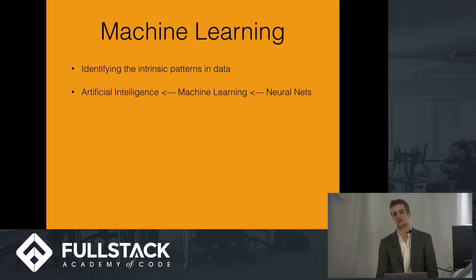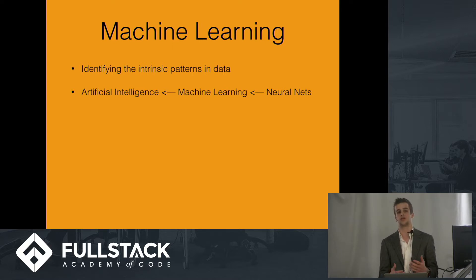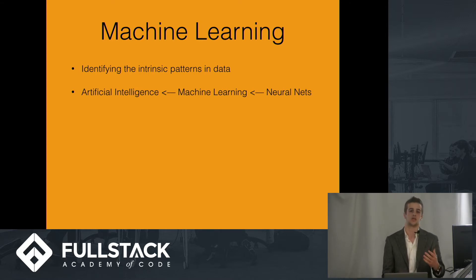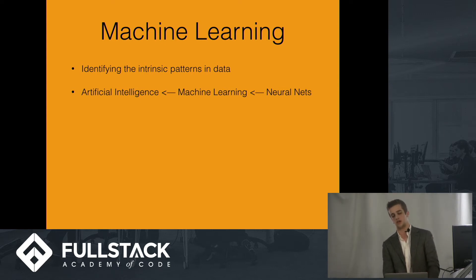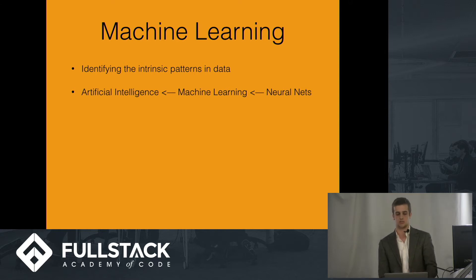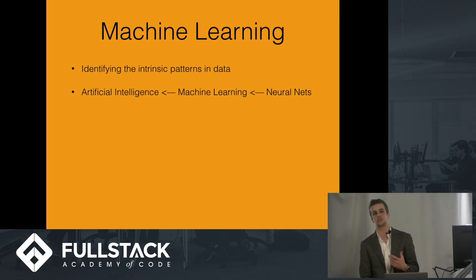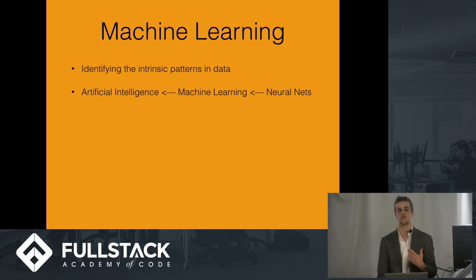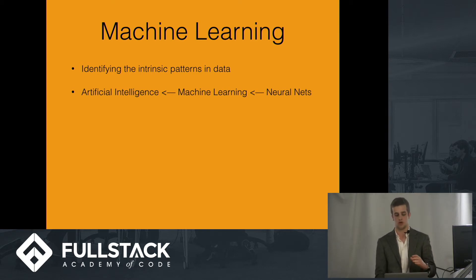Machine learning is a subset of artificial intelligence where you give the computer a bunch of pre-labeled data and tell the computer to find the pattern so that it can then use that pattern to predict new data that you receive later. Neural nets is another subset of machine learning — a particular type of algorithm based loosely off of our neurons and the way the brain works, the way that neurons fire when the electricity hits a certain threshold.